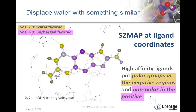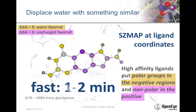We can run SHMAP very quickly at specific coordinates — in this case, just at the coordinates of the ligand atoms. It's a quick sampling, not a thorough sampling, but it's very fast. It allows us to do a survey in just one to two minutes.